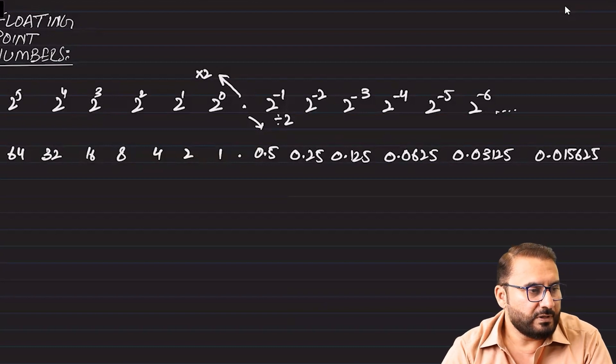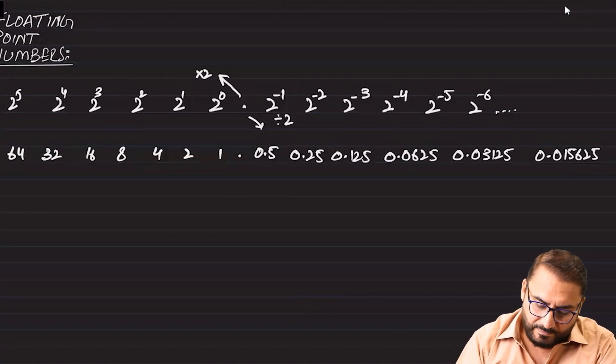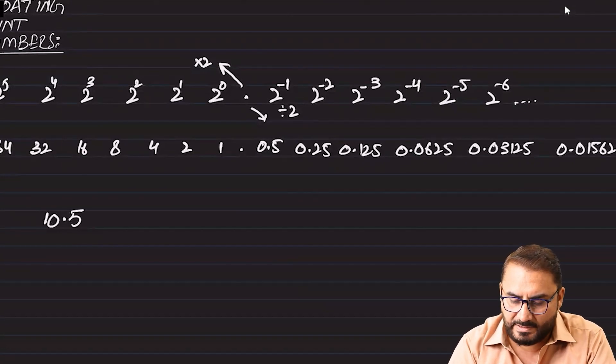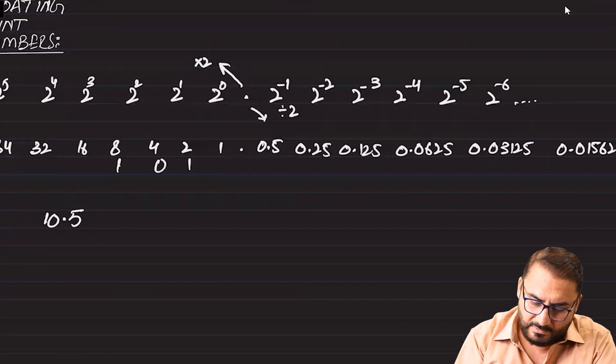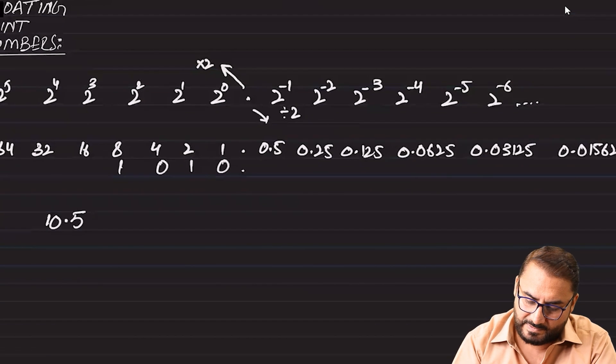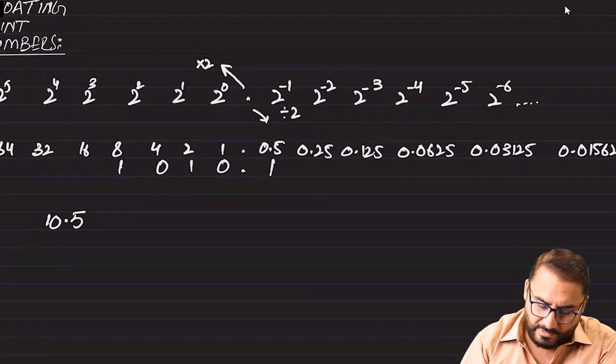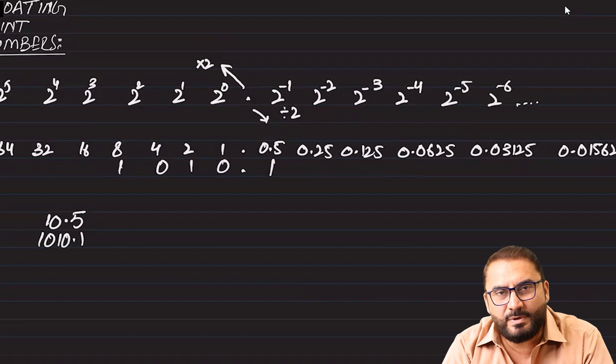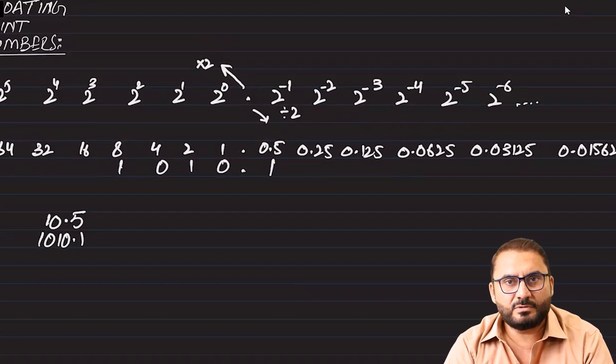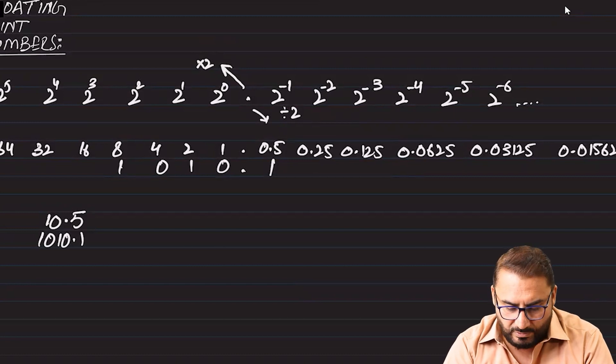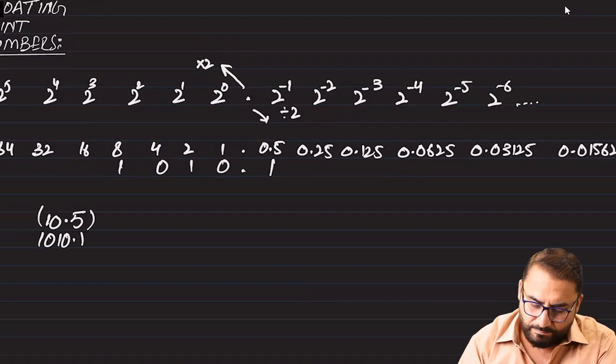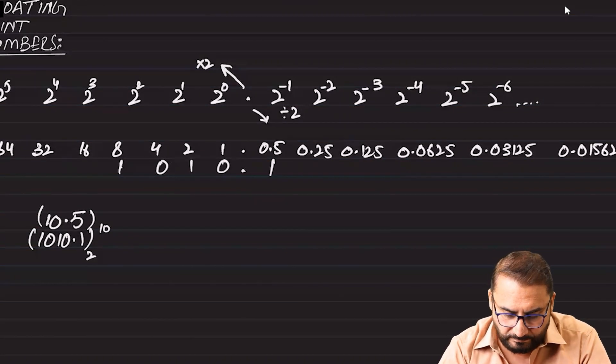We will convert 8 and 2, 1 underneath. So 8 and 2, this is 10. Point 5 is 1010.1. For the time being, leading zeros or trailing zeros we are not going to pay any attention to those. So this is literal conversion from base 10 to base 2 binary.